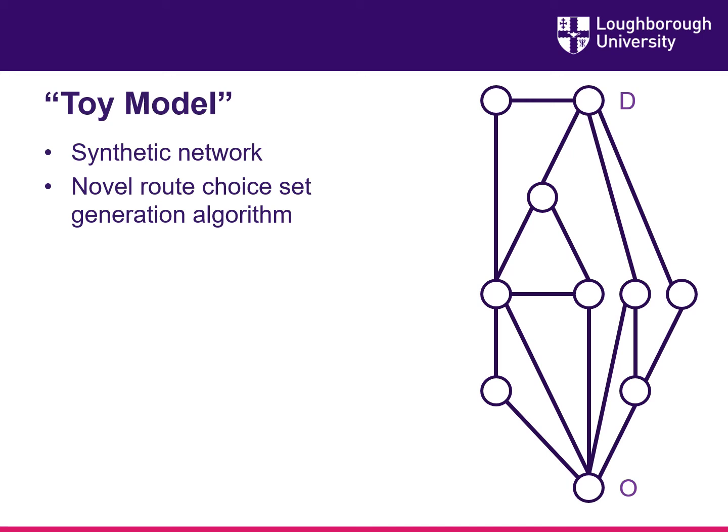For the purpose of testing our model and making sure that the program runs smoothly, we have developed what we call a toy model. This toy model does not use real world infrastructure data nor real world tracking data. Instead it uses a synthetic network consisting of 10 intersections represented by circles and links connecting those intersections, thereby representing the infrastructure that could possibly be used by micromobility users. In this toy model we are working with exactly one origin-destination pair, with the origin at the very bottom and the destination at the very top of the graphic.